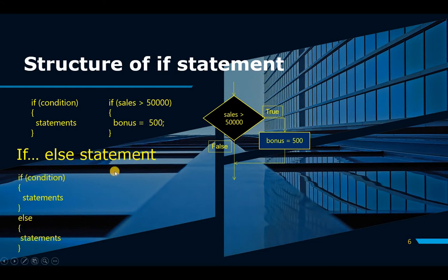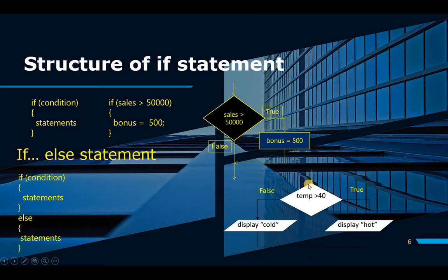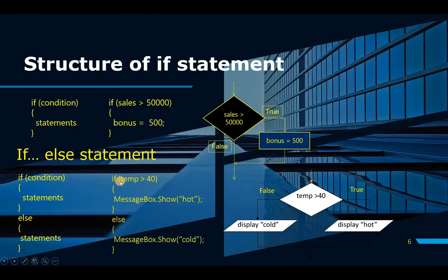An IF-ELSE statement is very similar, except you have the ELSE part at the bottom, and this ELSE will match with this IF. The flowchart looks like this: if the temperature is greater than 40, then we display 'hot', otherwise we display 'cold'. In the code, if temperature > 40, then message.show 'hot' — we're on this path. Otherwise, we don't need to check again, because if the IF statement is false, then automatically the matching ELSE runs, so message.show 'cold'. If this is not true, then this has to be true.